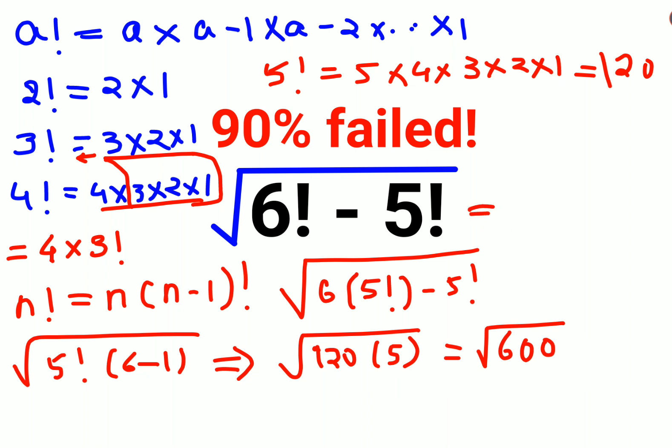Now in order to find the value of root 600, we can write it as 6 into 100. When you take the 100 out of the root, you can write it as 10 and keep the root 6 as it is. If they have not given you the value of root 6, you can keep this as your answer.